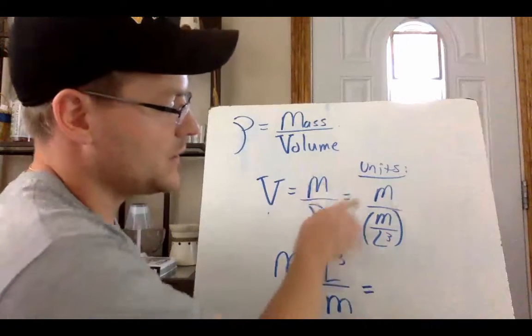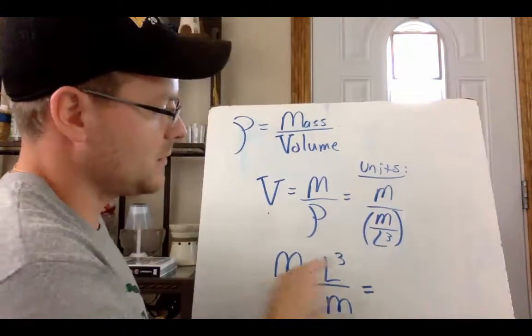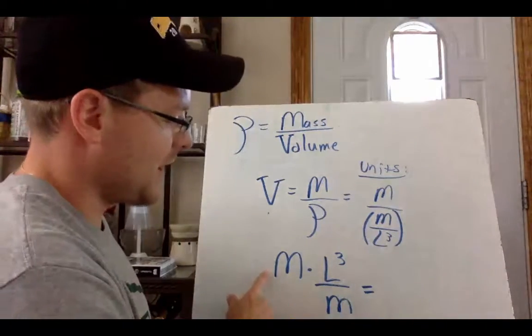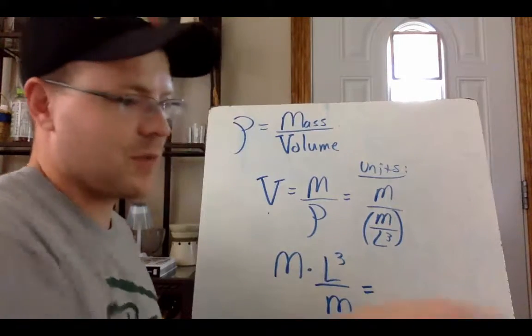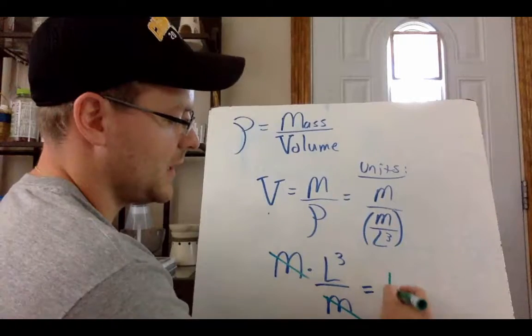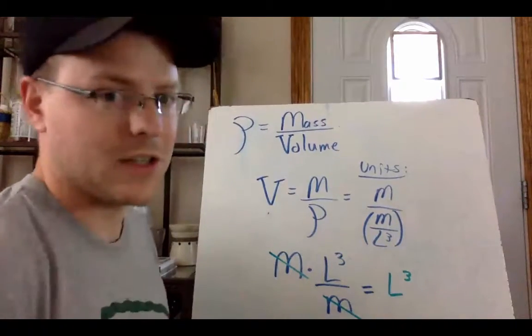So looking at the fractions here, I can rewrite this as multiplication by flipping and doing the reciprocal of the bottom. So that's really mass times length cubed over mass. And if I cross out my masses, that shows me that volume is measured in cubic length.